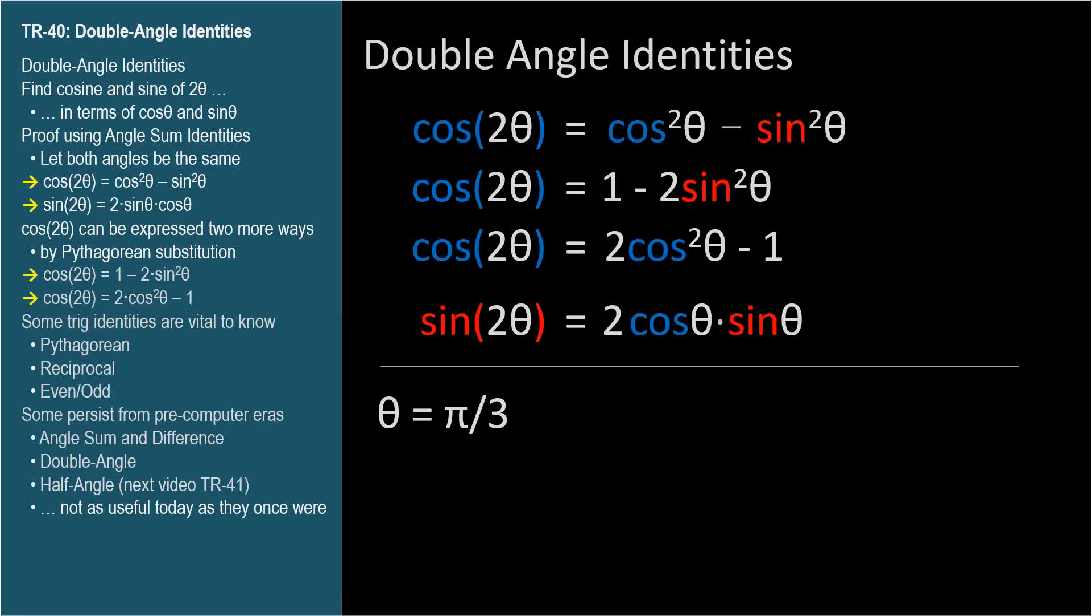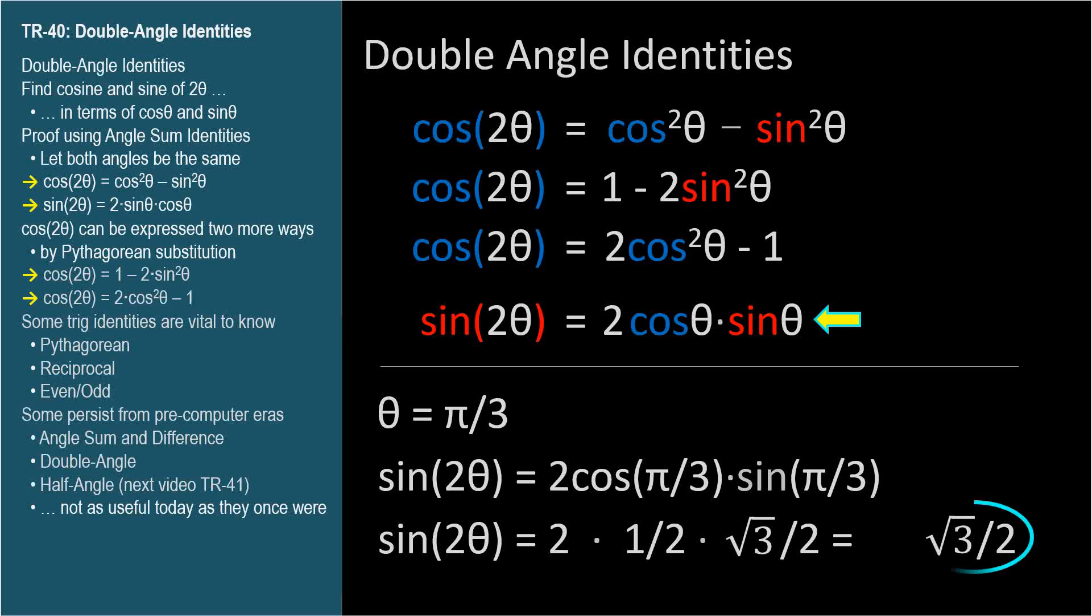Sine 2θ equals 2 sine θ cosine θ. 2 times square root of 3 over 2 times 1 half is square root of 3 over 2. These numbers check out because the cosine and sine of 2π over 3 are indeed negative 1 half and positive square root of 3 over 2.